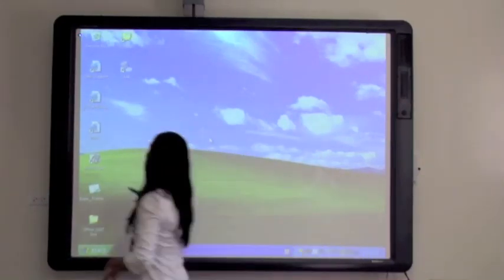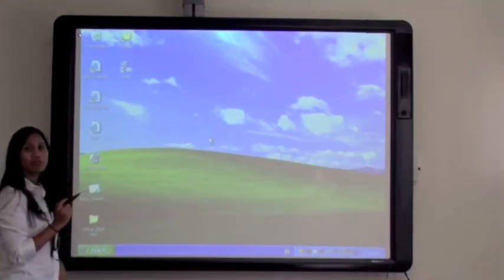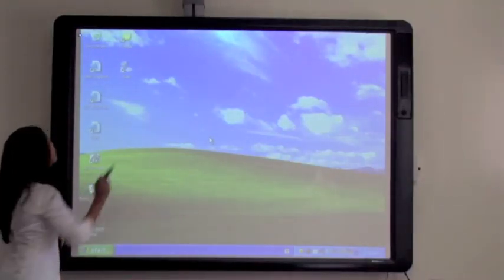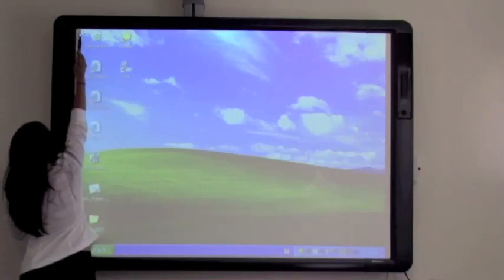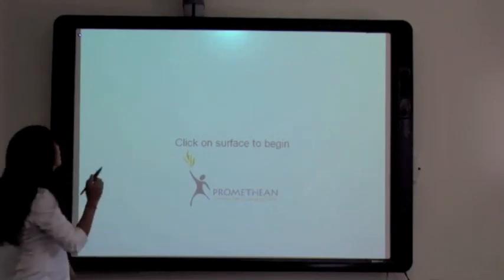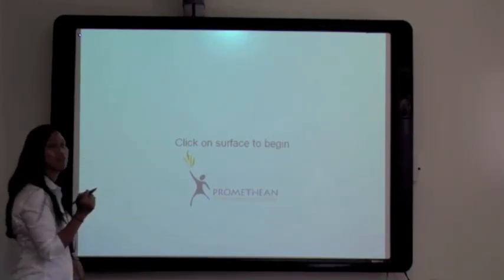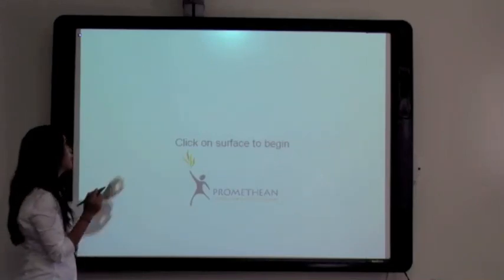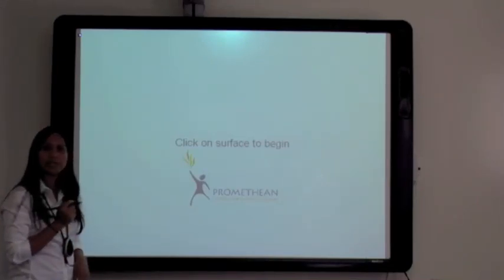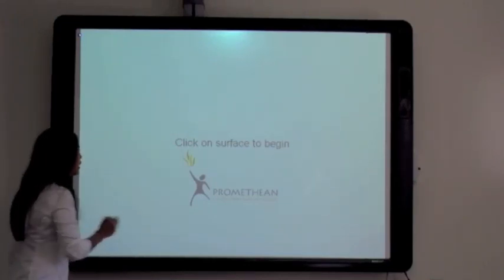To calibrate, I'm going to hover my pen tip to this white Promethean flame at the top left corner. Notice that it turns blue. And know that when I hover, I'm not touching the flame. I'm simply putting it close to that flame until it turns blue. And you notice that you get this white screen that says click on the surface to begin. I'm going to click on the surface.